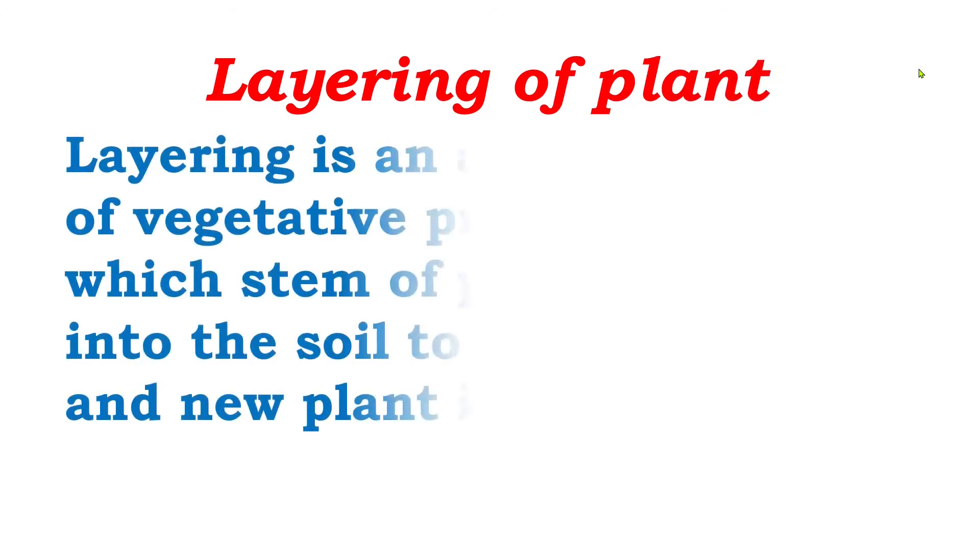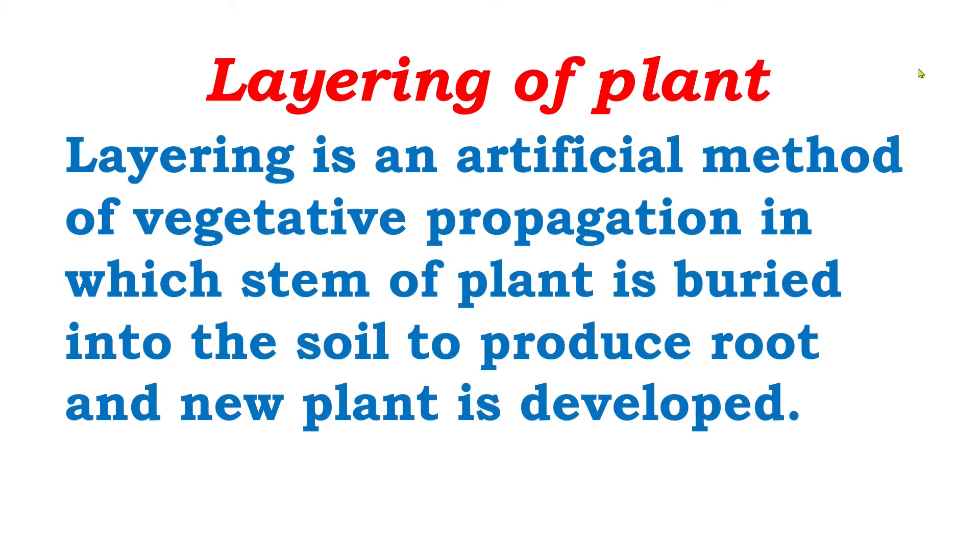What is layering? We have to understand first. Layering is an artificial method of vegetative propagation in which the stem of a plant is buried into the soil to produce roots and a new plant is developed.